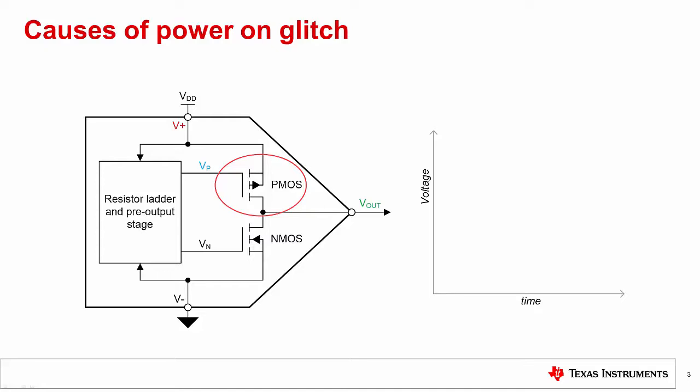The PMOS gate is usually the problematic FET in the design, and will primarily be the cause of Power-on Glitch. Let's consider what is happening at each node during startup. The supply, as indicated as V-plus, starts at 0 volts. The output stage of the gate of the PMOS, indicated as VP, and the output shown as V-out, are also 0 volts. At this point, the PMOS is not conducting.